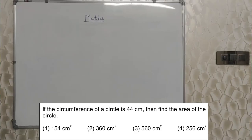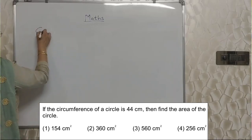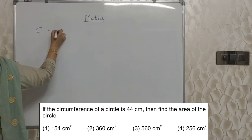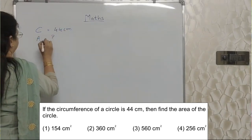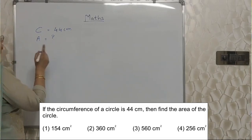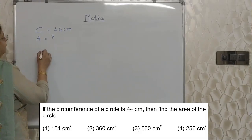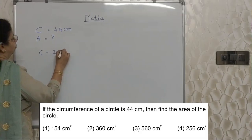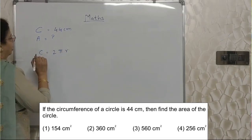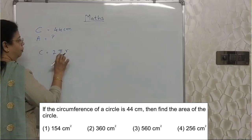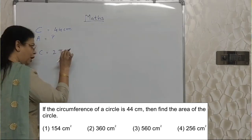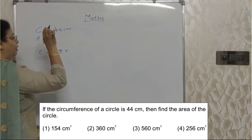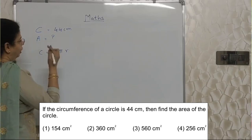If circumference of a circle is 44 cm, then find the area of the circle. Circumference is given as 44 cm and they are asking us to find out the area. First, you should know the formula of circumference of a circle: circumference equals 2 pi r. With this formula, using the value of C and pi, we will find out r. Then with r and the area formula, we will find the area.